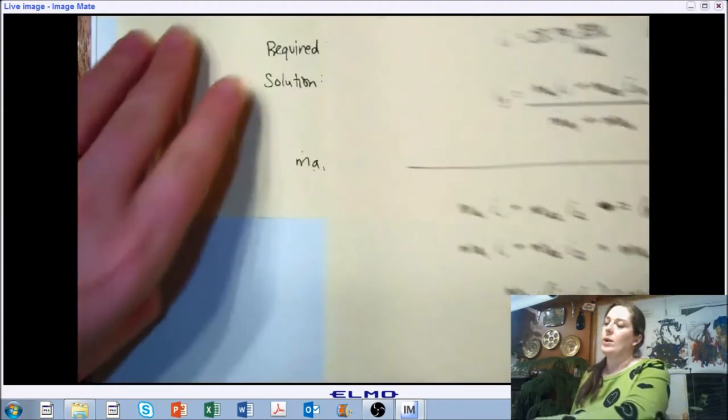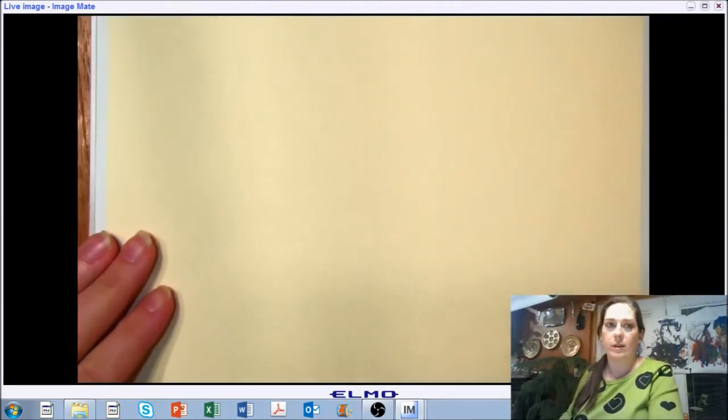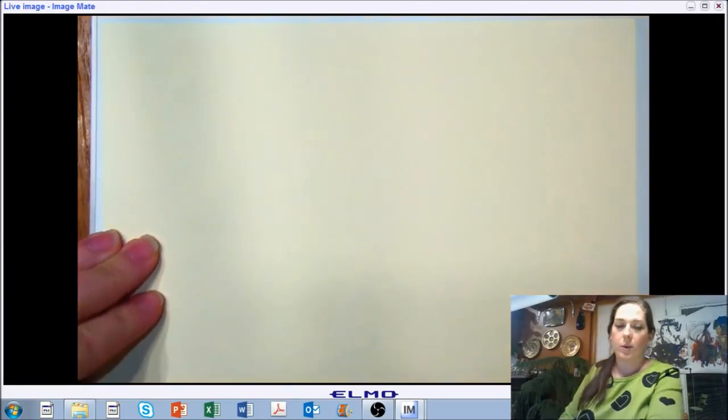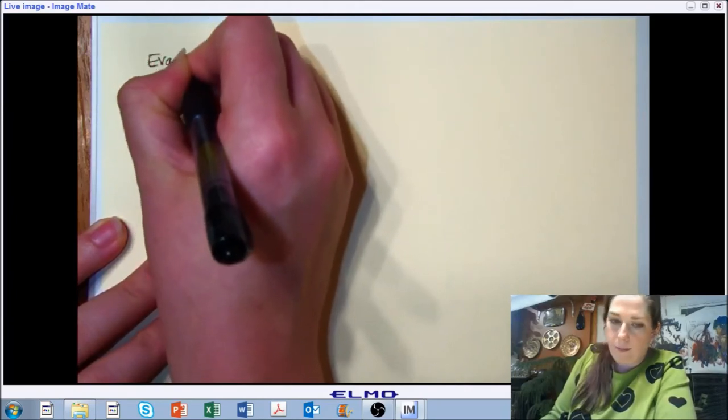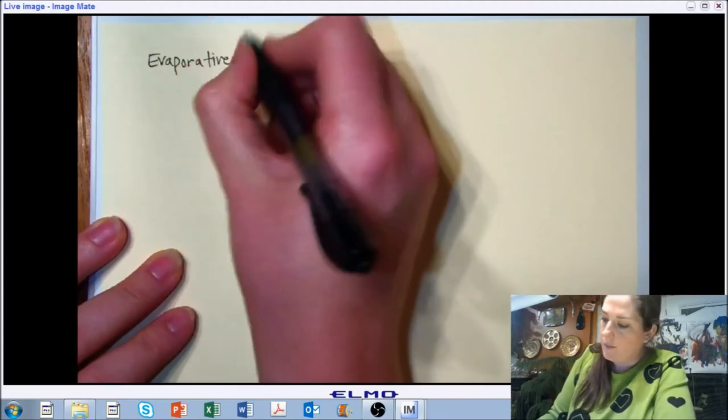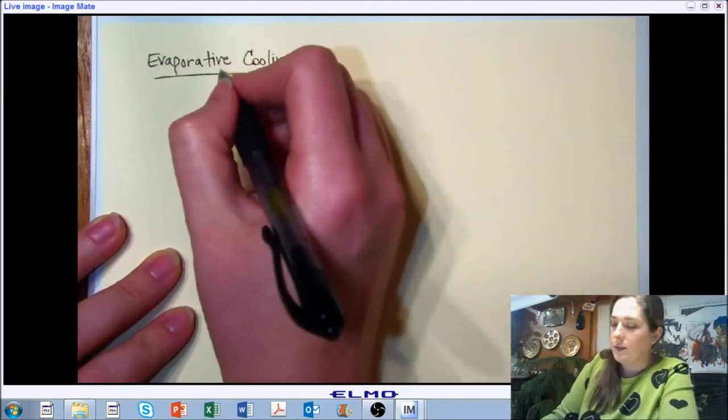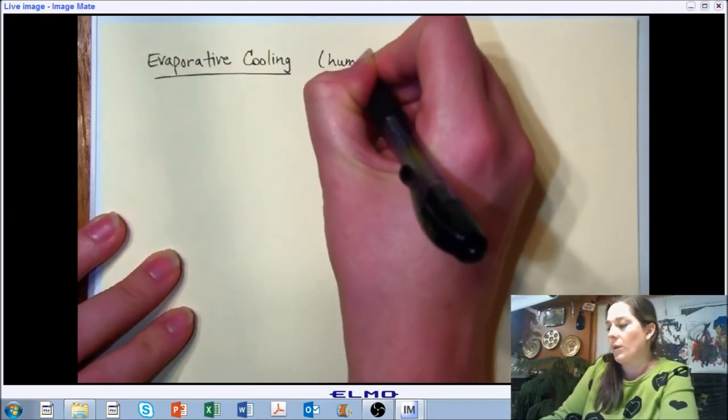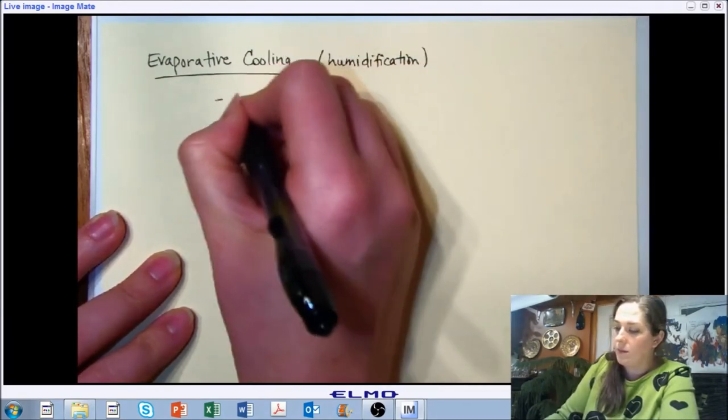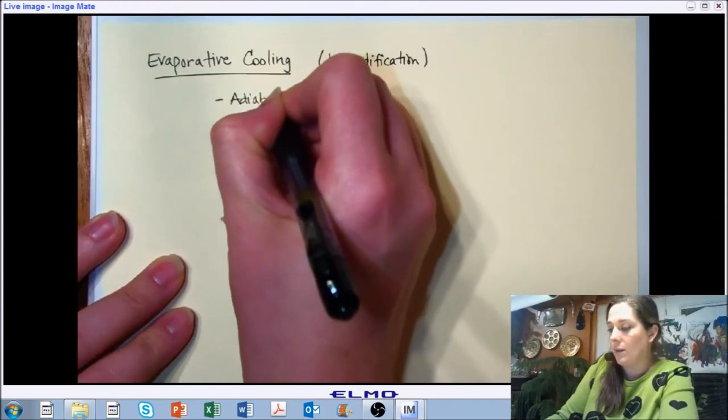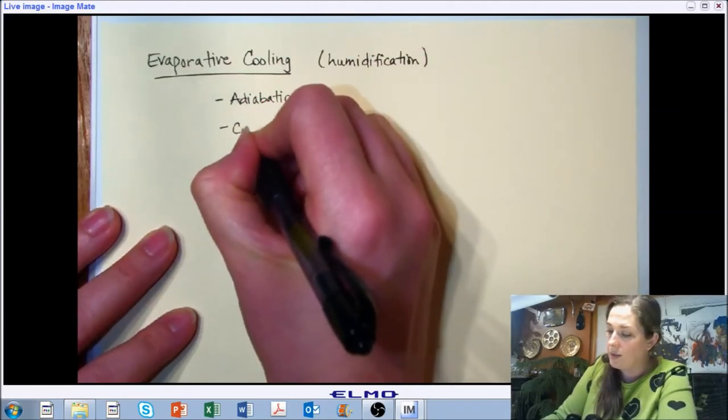We have one more process to discuss to wrap up this section. And we're going to discuss it relatively briefly because it's a relatively simple concept, but a very powerful process. It's evaporative cooling. This is also another form of humidification. It is an adiabatic process, meaning that we also don't provide any energy to initiate the state change to cause the state change.